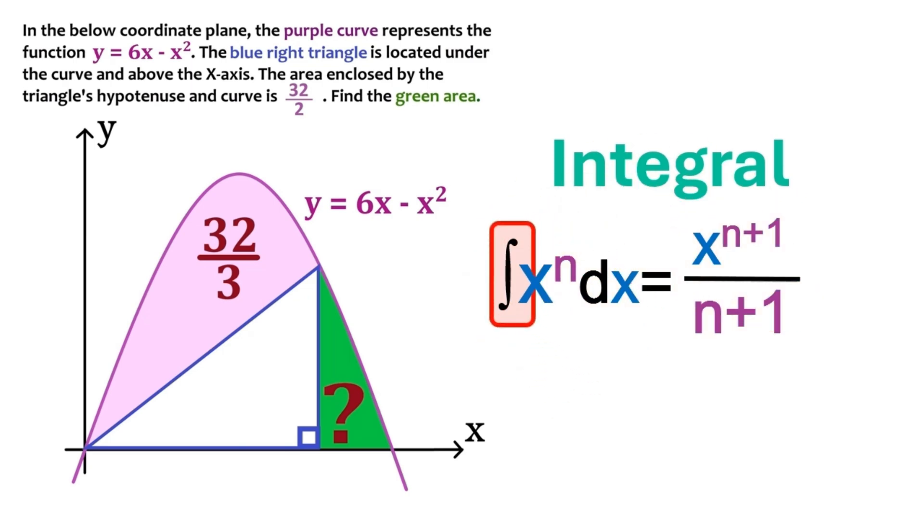Now, this here is the integral sign. And this dx tells that we are finding the integral with respect to x. And what we do is basically we add 1 to the exponent of x, and then divide it all by the exponent plus 1. And we are going to do that for each term in this function.